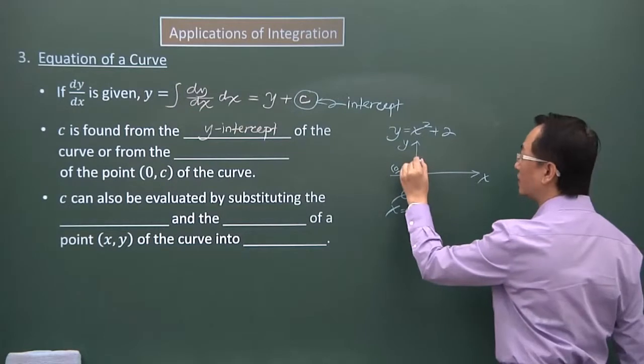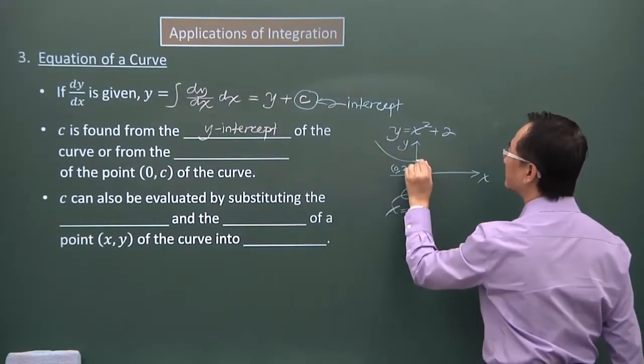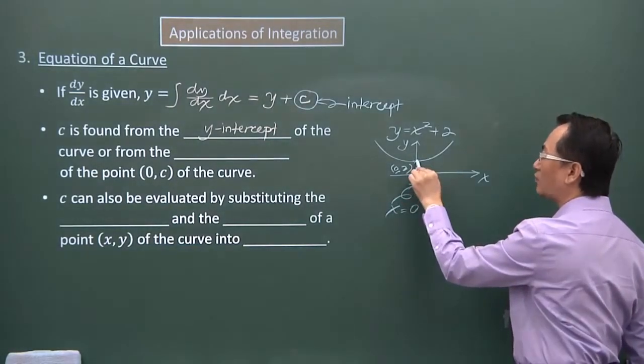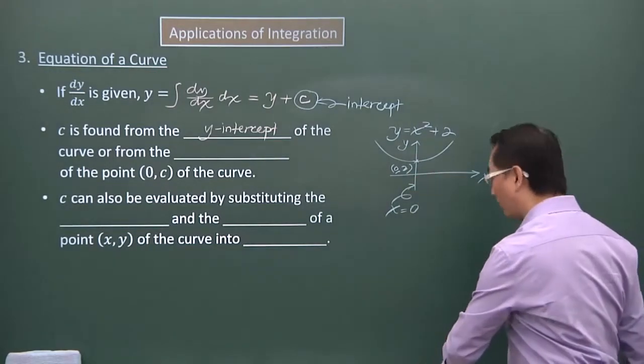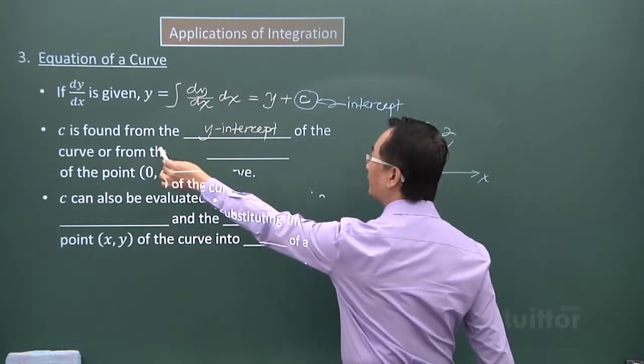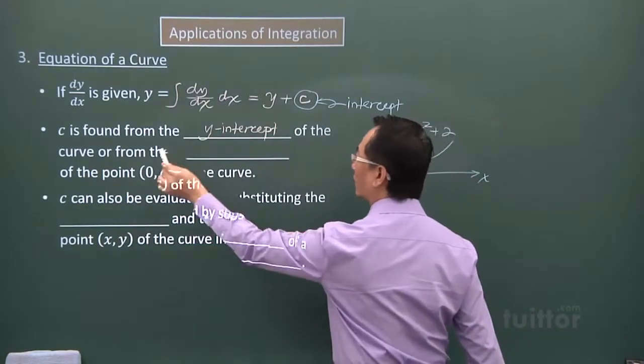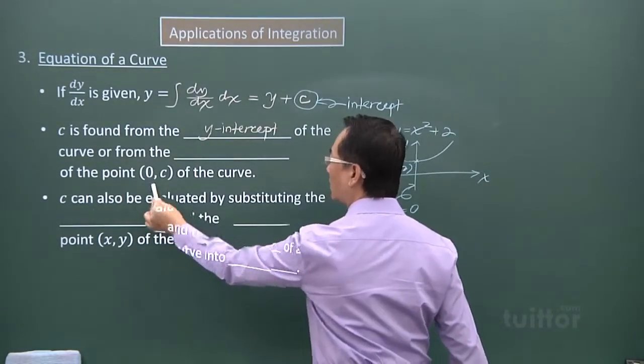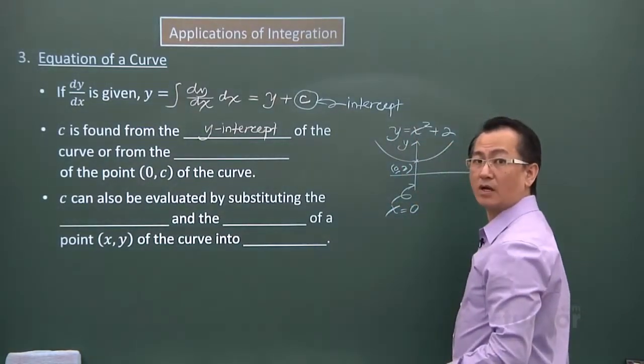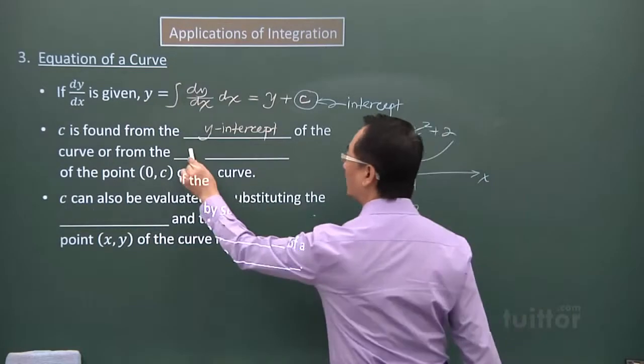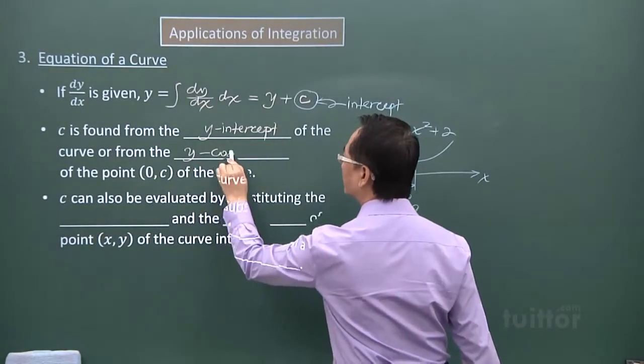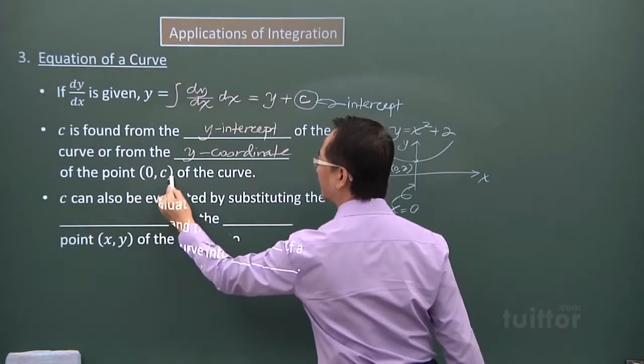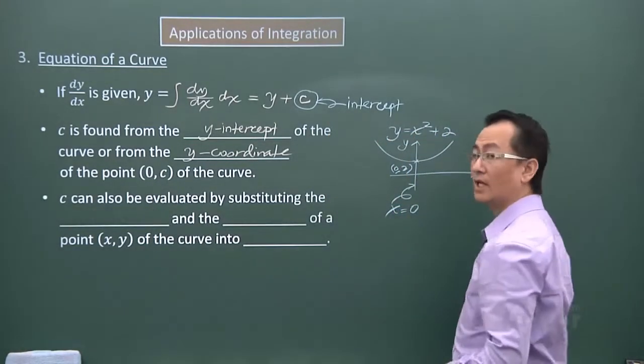And at this point where x is 0 and the y-value is 2. And for your information, the curve looks like this. It's a quadratic graph. You can see, the curve cuts through this point. So for this, c is found from the y-intercept of the curve. Or if you already know the intercept coordinates, then it will be the y coordinates of this point. You can see the c is appearing here.